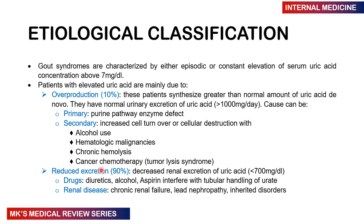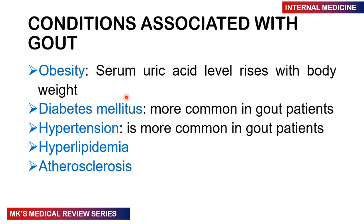Reduced excretion can be caused by drugs like diuretics, alcohol, or aspirin, which interfere with tubular handling of urate. Renal diseases such as chronic renal failure, lead nephropathy, and inherited disorders can also decrease uric acid excretion. Reduced excretion accounts for the majority of patients, with only 10% due to overproduction. Conditions associated with gout include obesity — higher uric acid levels are seen with greater body weight — as well as diabetes, hypertension, hyperlipidemia, and atherosclerosis.